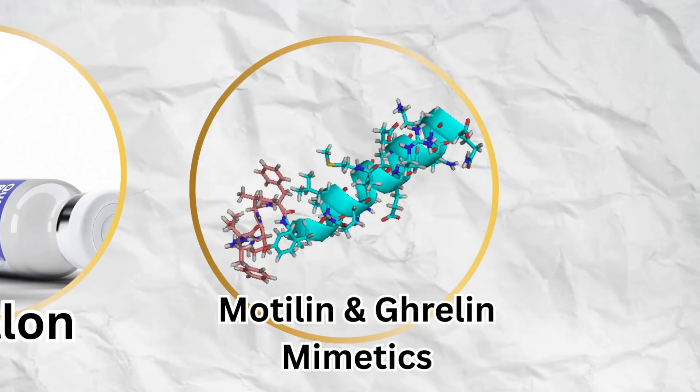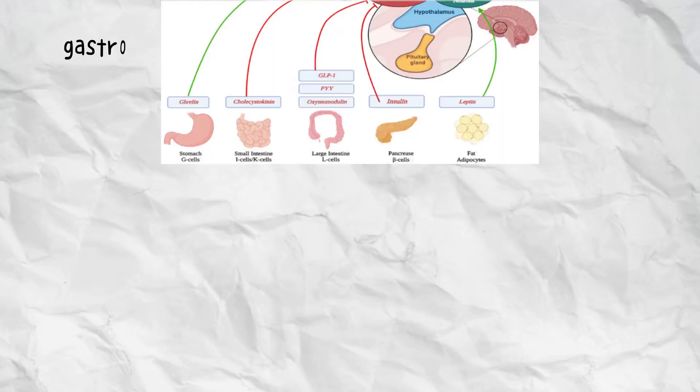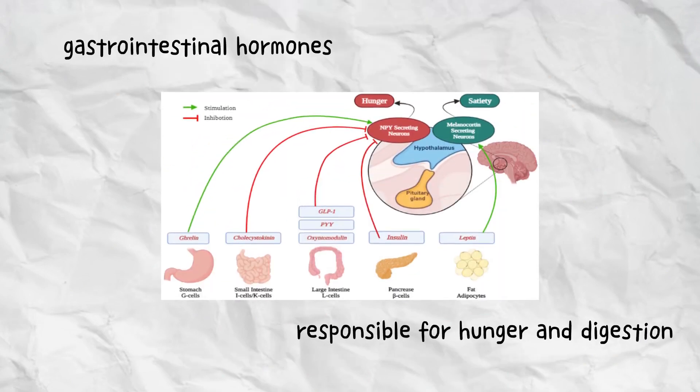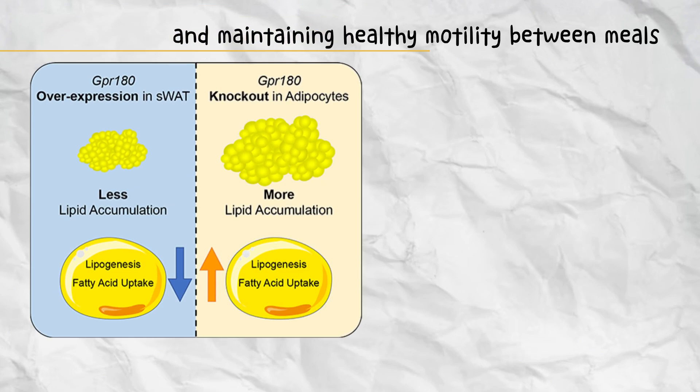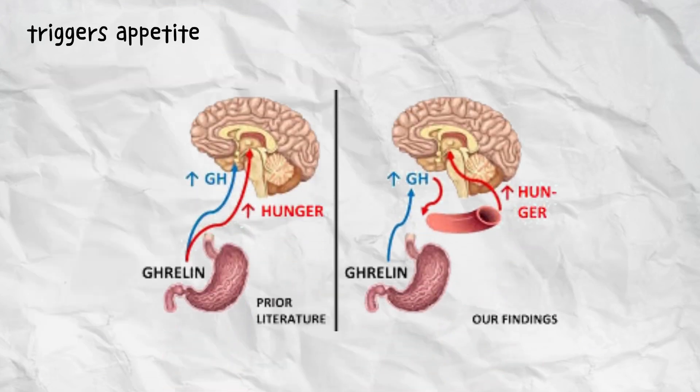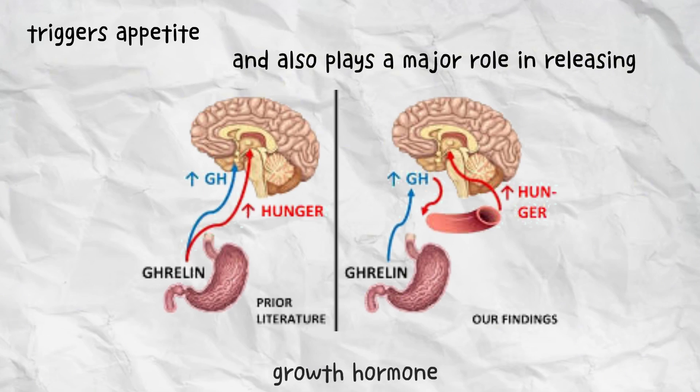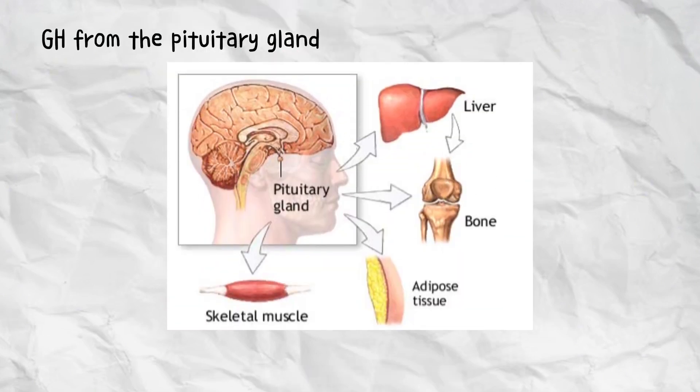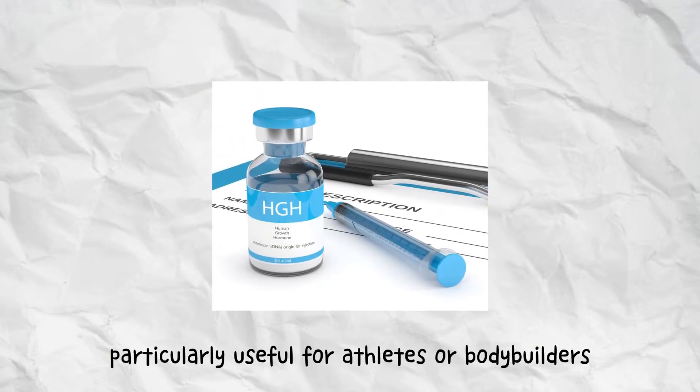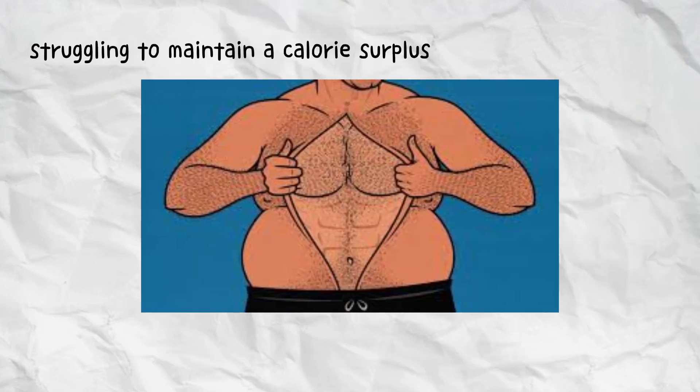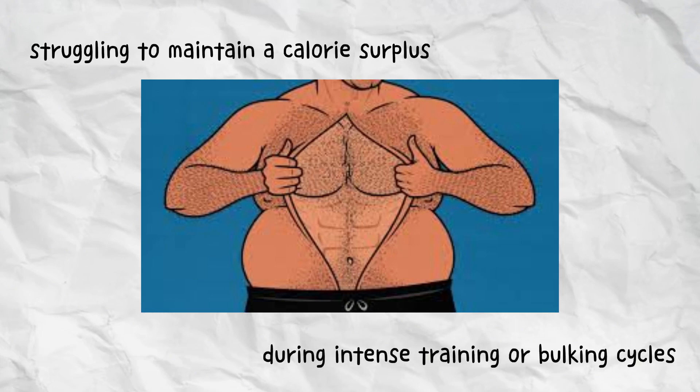Motilin and ghrelin mimetics are peptides that mimic the body's natural gastrointestinal hormones responsible for hunger and digestion. Motilin stimulates smooth muscle contractions in the digestive tract, promoting gastric emptying and maintaining healthy motility between meals. Ghrelin, often called the hunger hormone, triggers appetite and also plays a major role in releasing growth hormone from the pituitary gland. Synthetic mimetics of these peptides are designed to enhance appetite, digestion, and energy regulation, particularly useful for athletes or bodybuilders struggling to maintain a calorie surplus during intense training or bulking cycles.